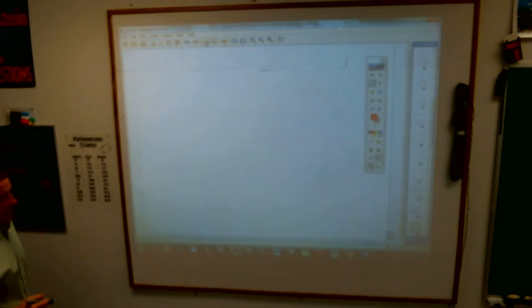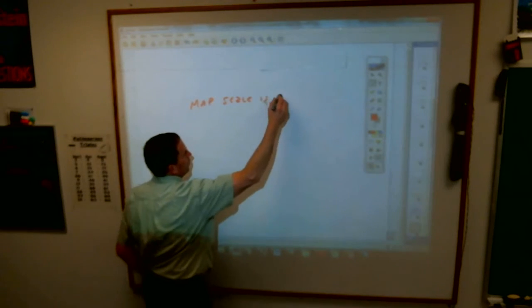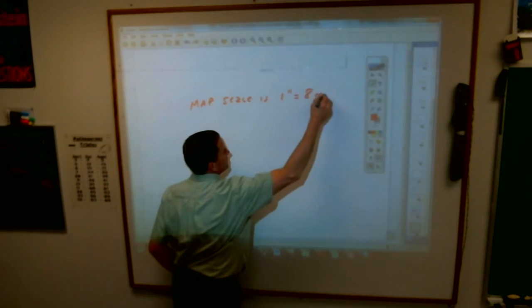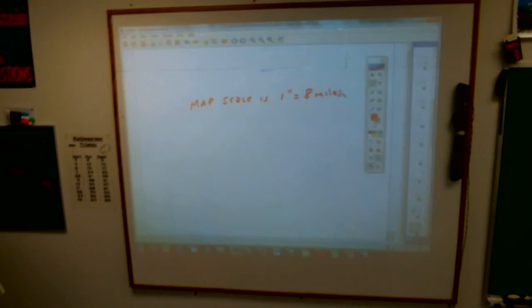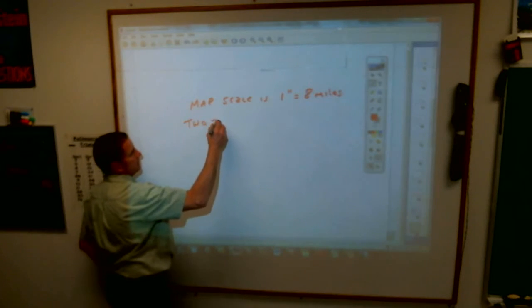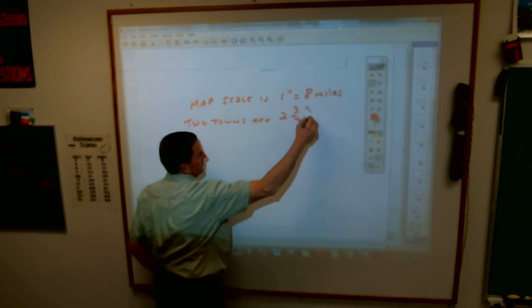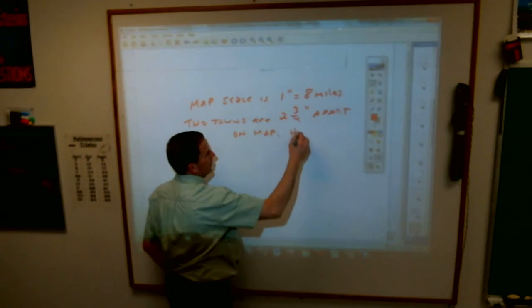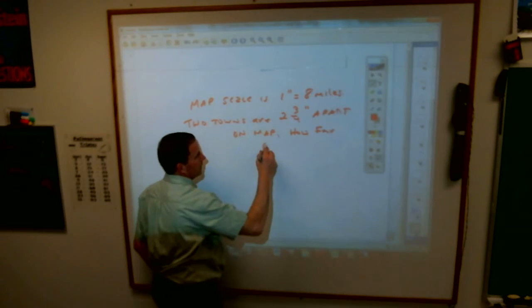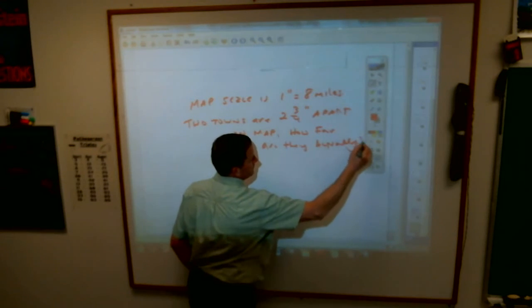A map is drawn with a scale of one inch. Map scale is one inch equals eight miles. I've been reading a map is kind of a thing in the past because you all have really smart phones and you plug in and tell you guys. Two towns are two and three-fourths inches apart. Two towns are two and three-fourths inches apart on the map. How far are they actually?